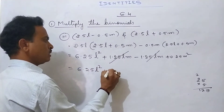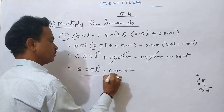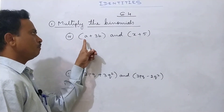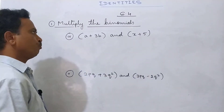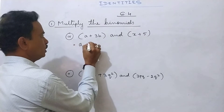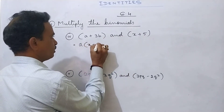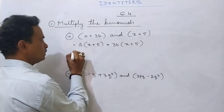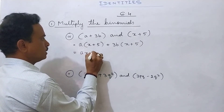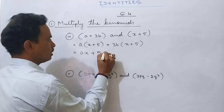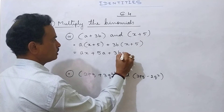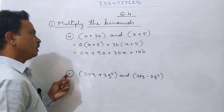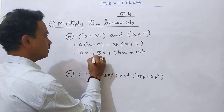Plus 1.25lm minus 1.25lm get cancelled, so the answer is 6.25l² + 0.25m². Fourth question: (a + 3b) and (x + 5). Write first term a into second binomial (x + 5), then plus 3b into (x + 5). Multiply: a times x is ax, plus 5a, plus 3b times x is 3bx, plus 5 times 3b is 15b. No like terms, so this is the answer: ax + 5a + 3bx + 15b.